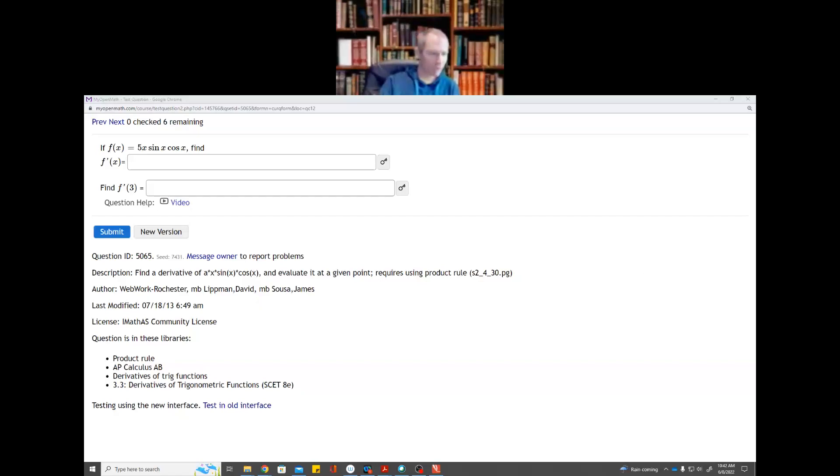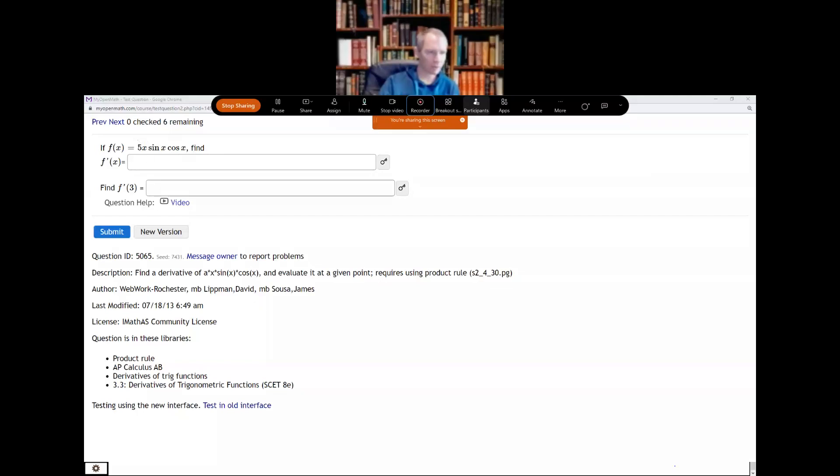And I think that what makes this one interesting, or at least different from a lot of the other problems that we did, is if I look at the function, the original that they're giving me, 5x is some function of x, sine x is a function of x, cosine x is a function of x. So I have a product of three things, and our product rule tells us how to take the derivative of two things.